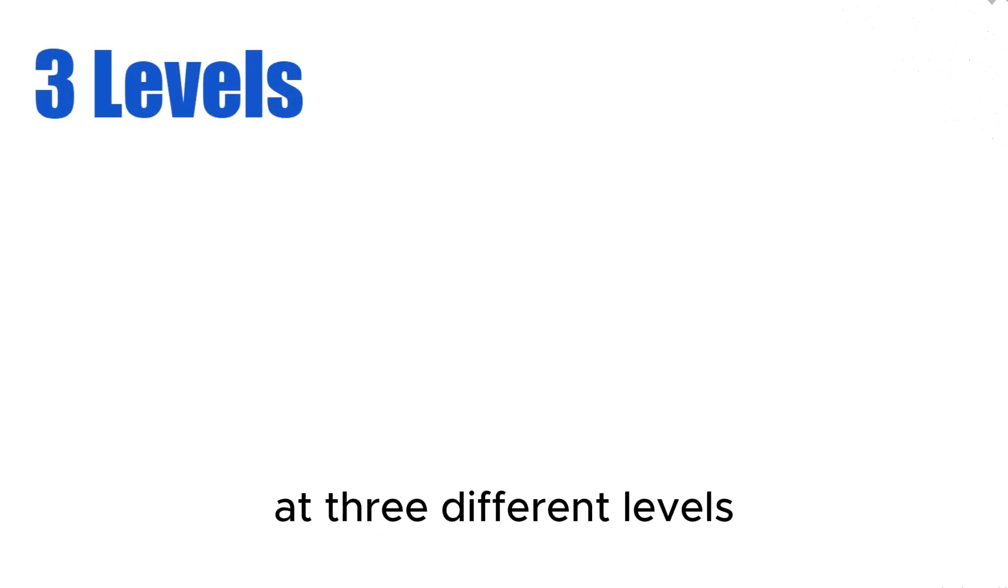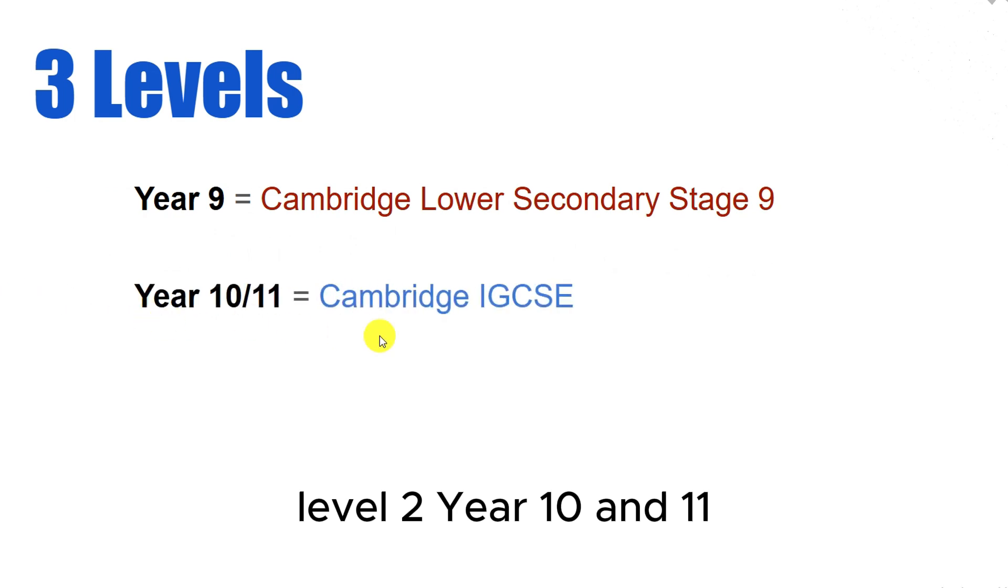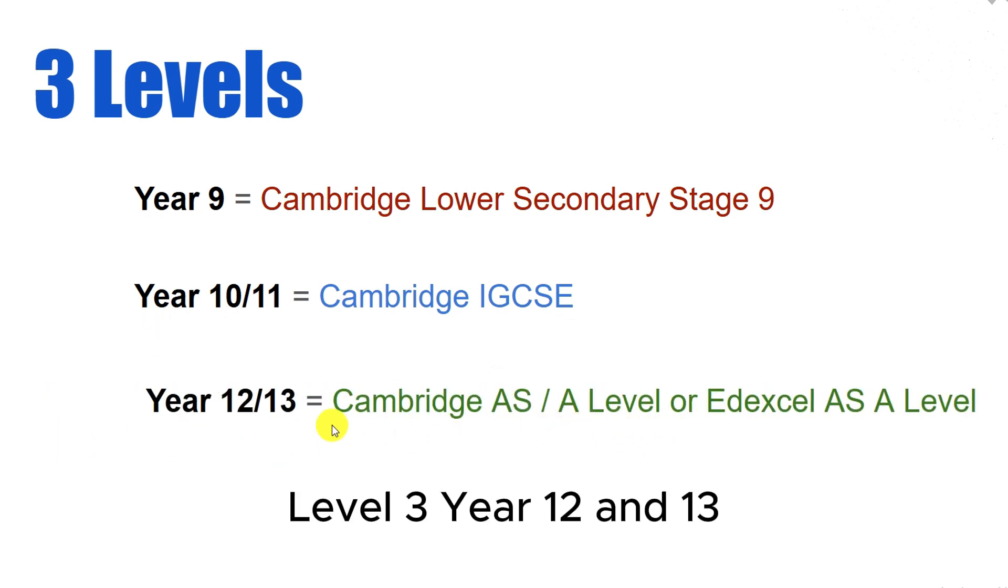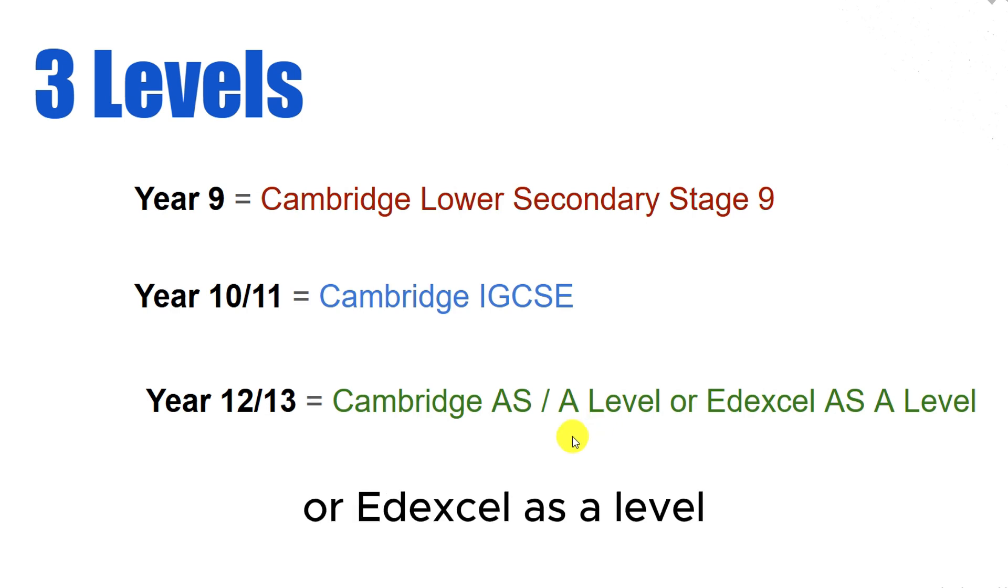However, today we will master electronic configurations at three different levels. Level 1, Year 9, which is equivalent to Cambridge Lower Secondary Stage 9. Level 2, Year 10 and 11, equivalent to Cambridge IGCSE. Level 3, Year 12 and 13, equivalent to Cambridge AS/A level or Edexcel AS/A level.